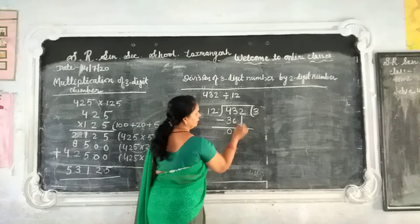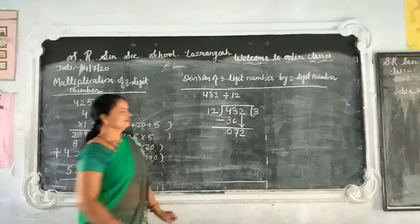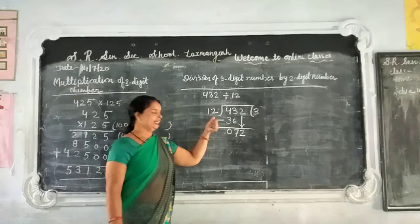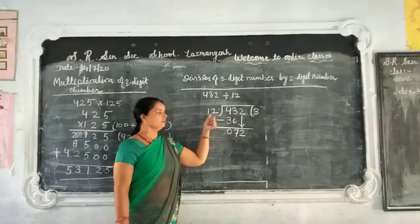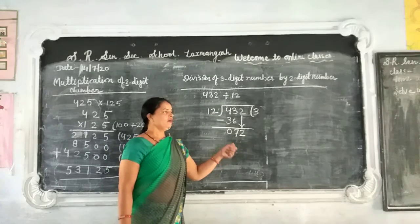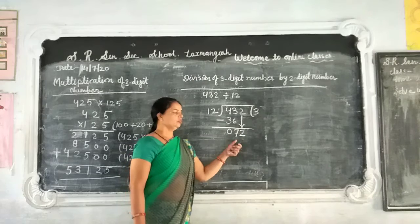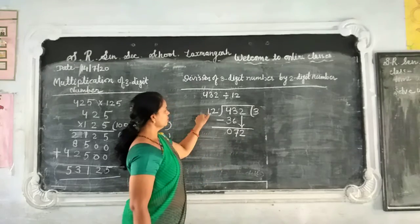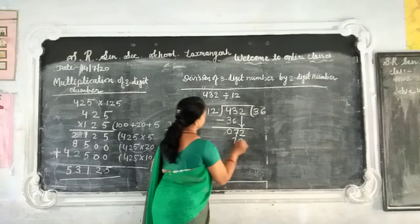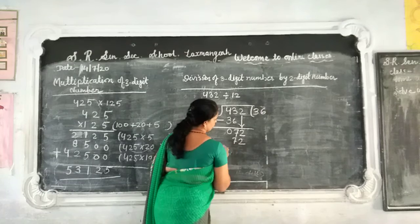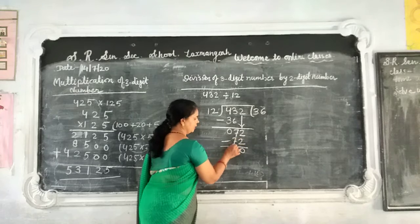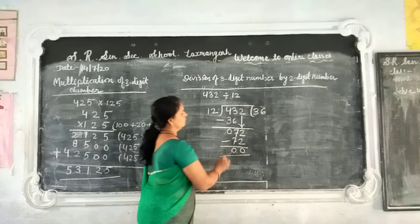We bring down the next digit, giving us a new number: 72. We check: in the 12 times table, 12 times 6 is 72. So we can divide. We subtract: 72 minus 72. 2 minus 2 is 0 and 7 minus 7 is 0. The remainder is 0.